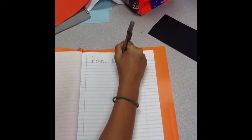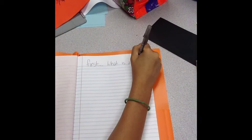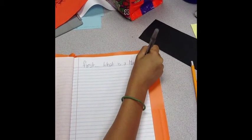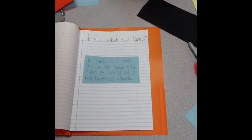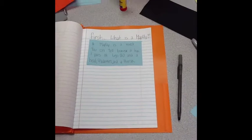First, what is a Mayfly? Well, a Mayfly is an insect. You can tell because it has three pairs of legs, six legs, and it has a head, thorax, and an abdomen.